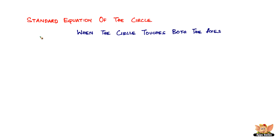In this video, let us look into one of the many conditions of the standard equations of the circle. In this case, it is what happens to the standard equation of the circle when the circle touches both the axes — that is both the x-axis and the y-axis. In the previous two videos we saw what happens when the circle touches the x-axis and when it touches the y-axis. In this video, we're going to see what happens when the circle touches both the axes at the same time.